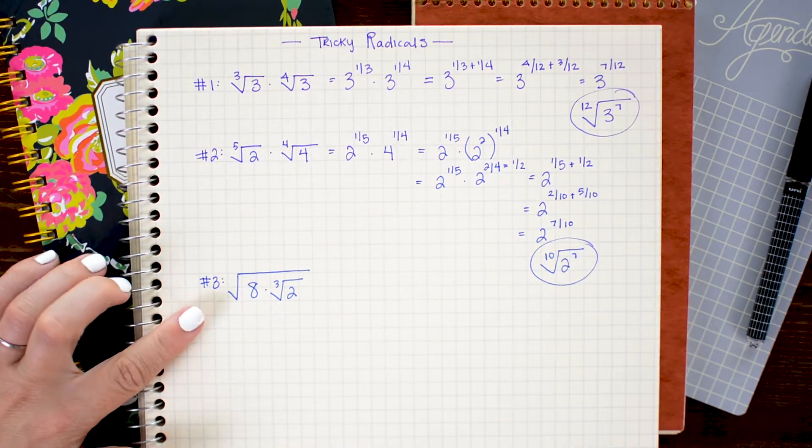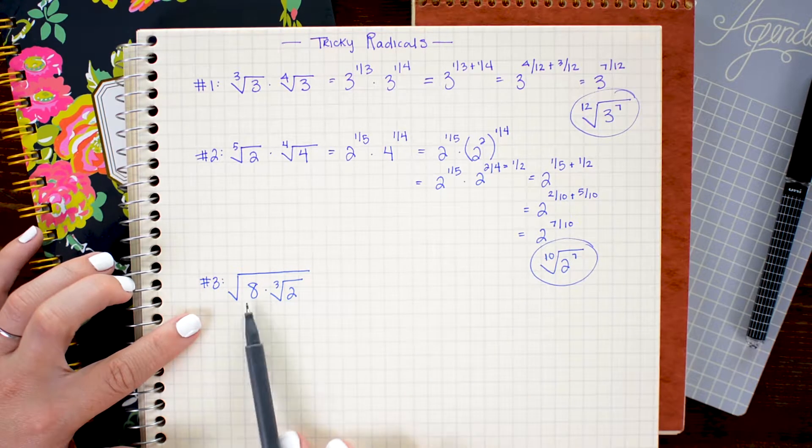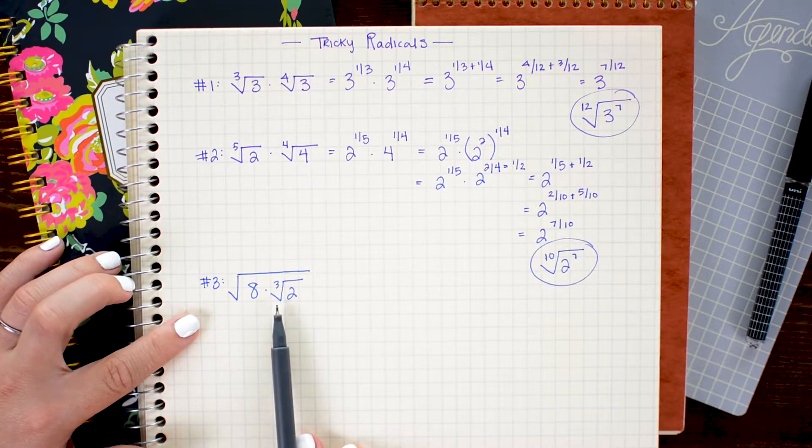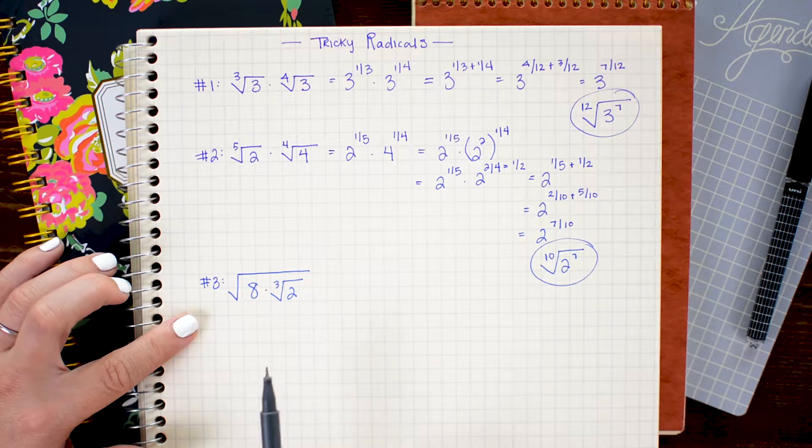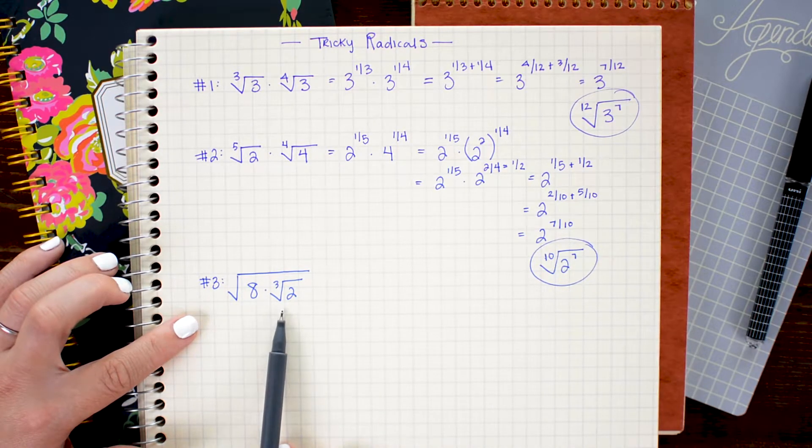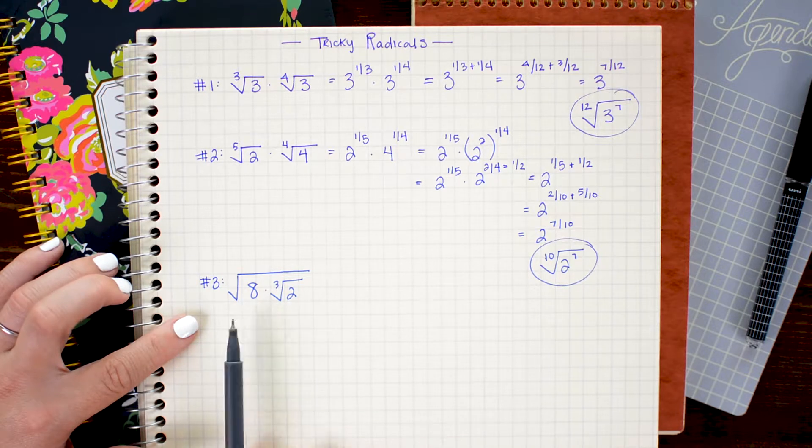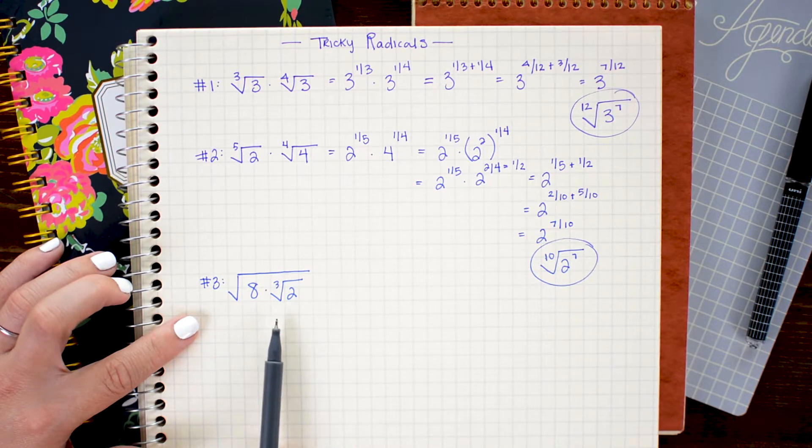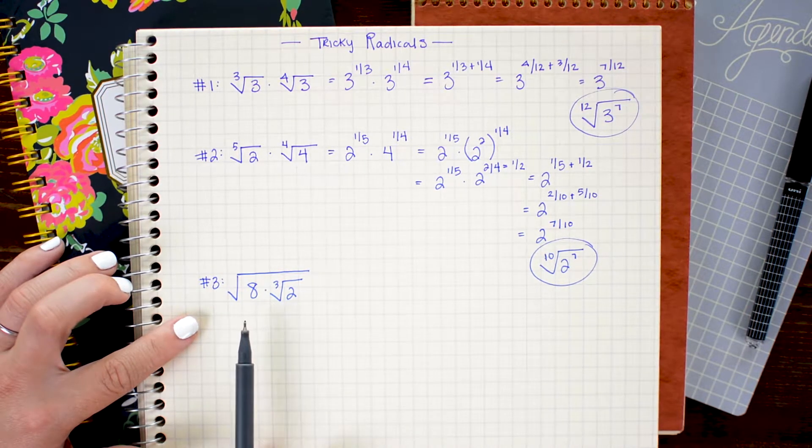Another sort of tricky thing you might see is nested radicals. And again, this is why knowing the fraction notation is so important because in radical notation it's just completely unclear how you would handle this. So let's start by trading it out for the alternate notation.